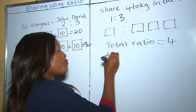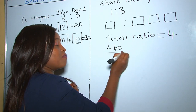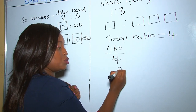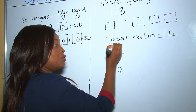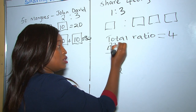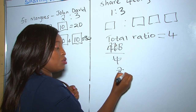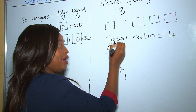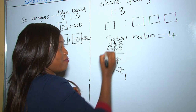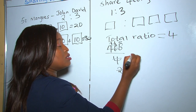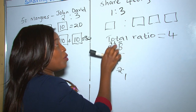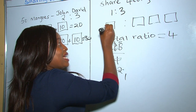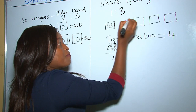Remember, sharing using ratio is just basically division. So we divide 460 kilograms by 4, which gives us 115. Therefore each portion is 115 kilograms.